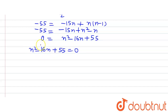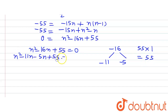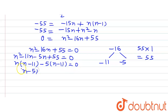To factorize this, we split the term minus 16 such that the product of the two parts equals 55 times the coefficient of n squared, which is 1, giving 55. We split minus 16 as minus 11 and minus 5, since minus 11 multiplied by minus 5 equals 55. So we write n squared minus 11n minus 5n plus 55 equals 0, taking n common gives n times n minus 11, minus 5 times n minus 11 equals 0, so n minus 11 times n minus 5 equals 0.